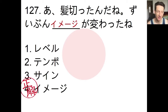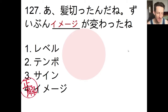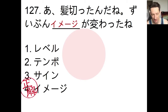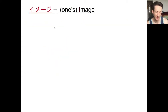ずいぶん means 'completely' or 'quite a lot.' イメージが変わった means 'your image or appearance has changed.' So you look completely different after having cut your hair. Now we're going to take a closer look at these katakana vocabulary words. As you probably know, Japanese is full of loanwords written in katakana — most of them come from English.